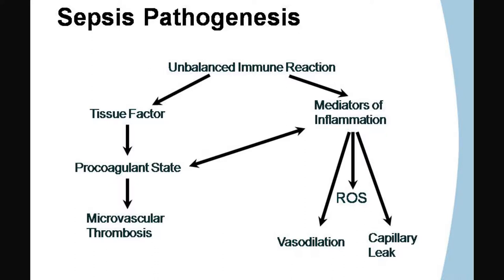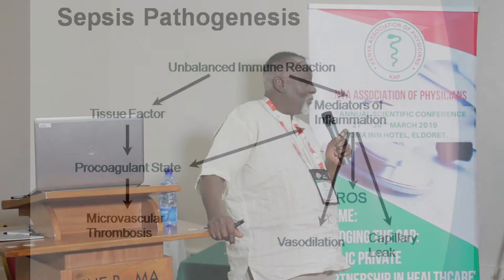From basic immunology, for every insult to your system there is always a rapid response and a slow response. Both involve humoral and cellular components. But the rapid response is more humoral, while the delayed response involves a lot more cellular activity.